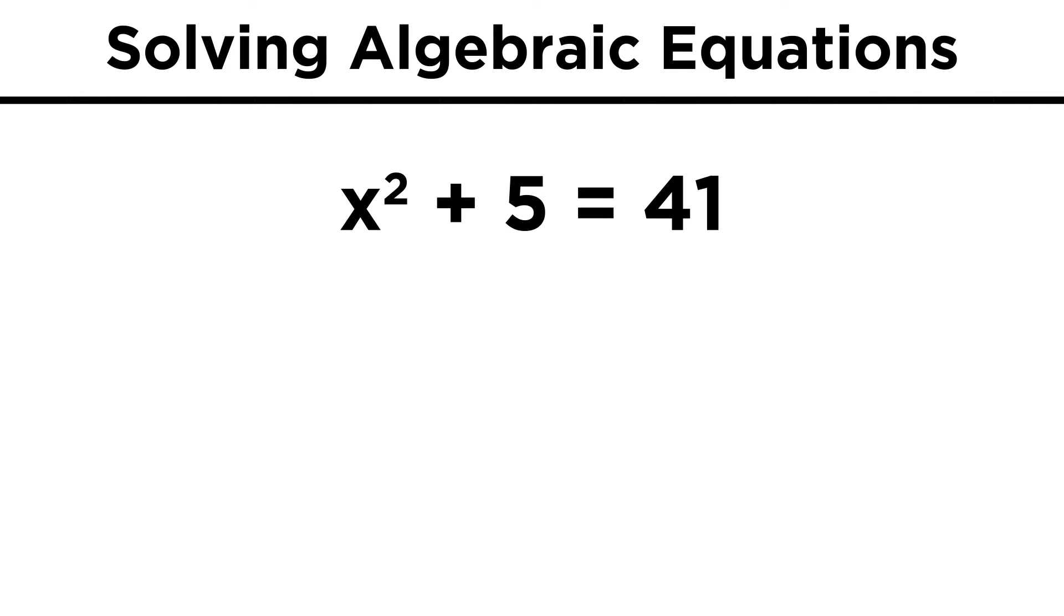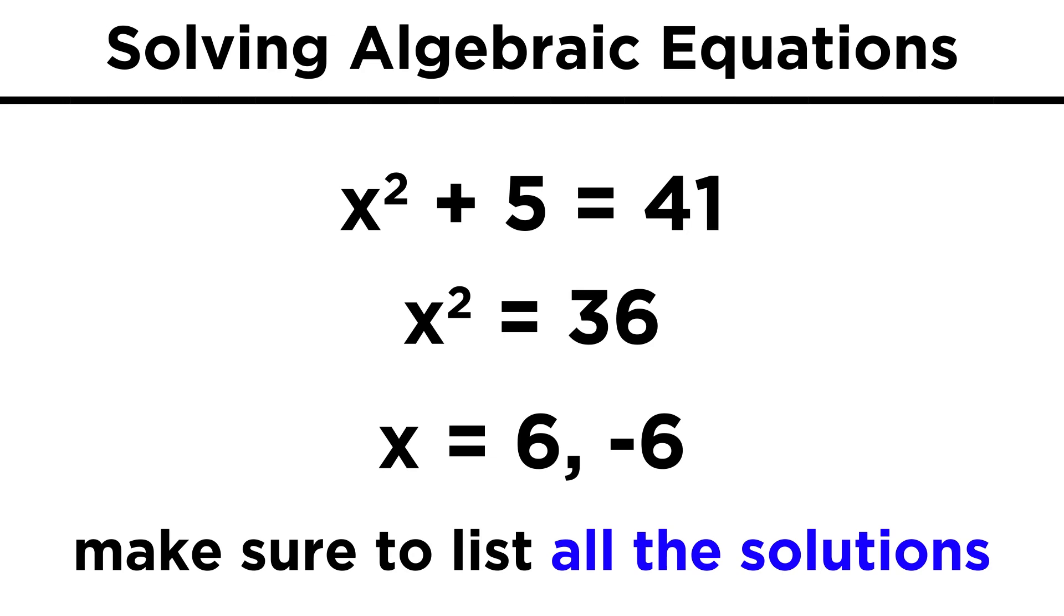When we have something like x squared plus five equals forty-one, this is also quite easy. We just subtract five and then take the square root. But remember, when we take the square root of something, we get two answers - in this case positive six and negative six - so we have to keep in mind that these types of equations have two solutions.